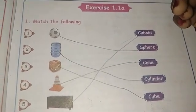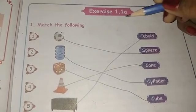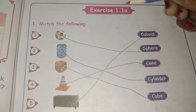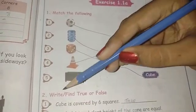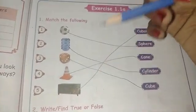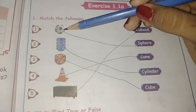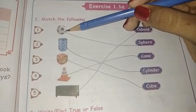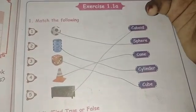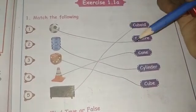Hello friends, in this video we are going to see Exercise 1.1a: match the following and write/find true or false. Okay, first what's this? Yeah, this is a ball. How does a ball look like? It looks like a sphere, so it connects to sphere.